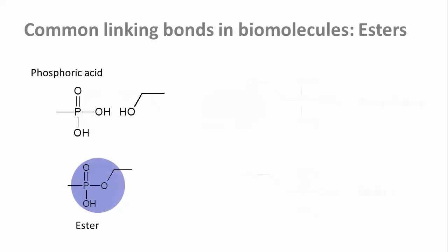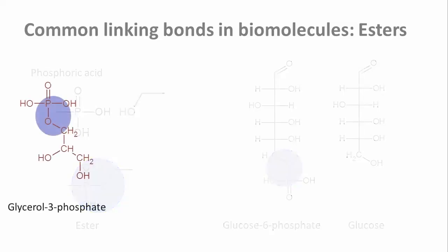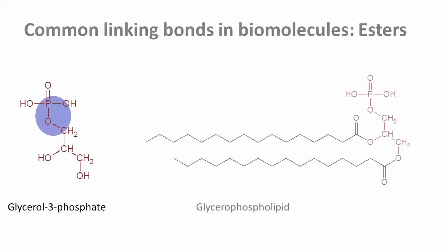Phosphoric acid can also form esters with hydroxyl groups. For example, glucose-6-phosphate is a phosphoester of glucose. Here's an example with both types of bonds: glycerol phosphate has a phosphoester bond here, and in this glycerophospholipid — an example of the lipids that form our biological membranes — the remaining two hydroxyl groups of glycerol additionally form ester bonds with long-chain fatty acids.